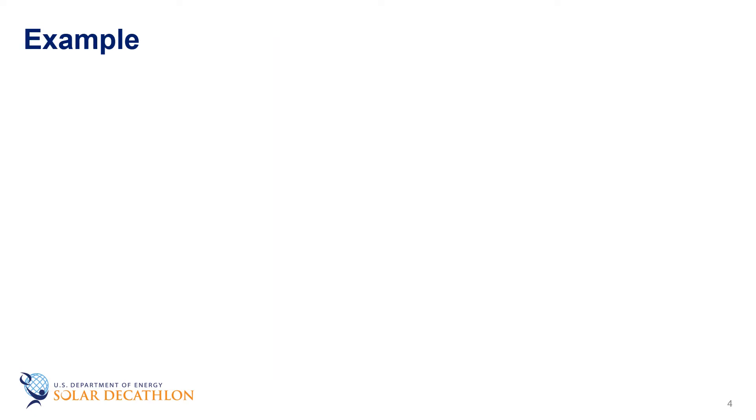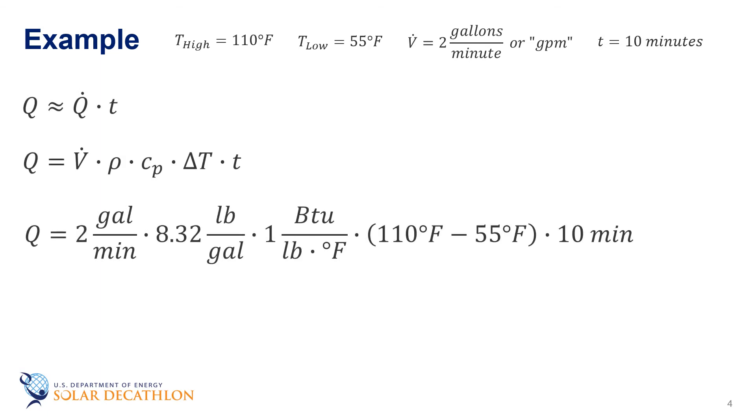Now for an example. We will use 110 degrees Fahrenheit as a hot water supply temperature and 55 degrees Fahrenheit as a cold water supply temperature. If a shower uses two gallons per minute of water for 10 minutes, the amount of energy required to heat the hot water is 2 times 10 times the density, 8.32 times the specific heat, 1 times 110 minus 55. All of those numbers have appropriate units. And if you do the math that comes out to 9,152 BTUs.